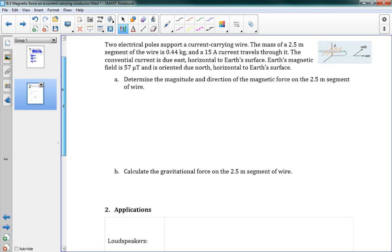Alright, on the next page, we have one more problem. It says two electrical poles support a current carrying wire. The mass of a 2.5-meter segment of the wire is 0.44 kilograms, and a 15-amp current travels through it. The conventional current is due east, horizontal to Earth's surface. And Earth's magnetic field is 57 microteslas, and is oriented due north, horizontal to Earth's surface. This bit here where we say horizontal to Earth's surface, it's necessary so that we understand exactly. We can't just say it's going north, it needs to be north, horizontal to the surface.